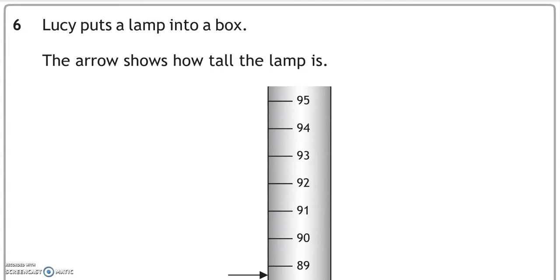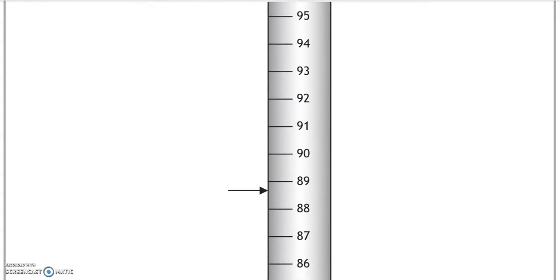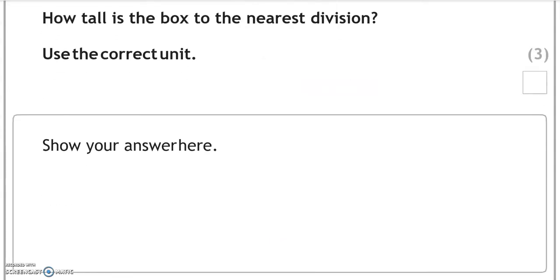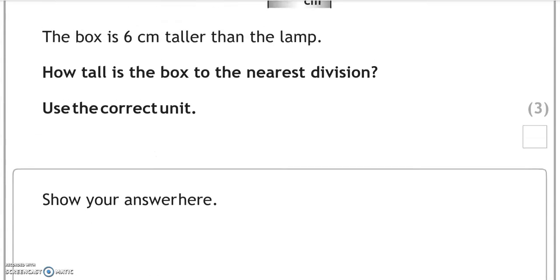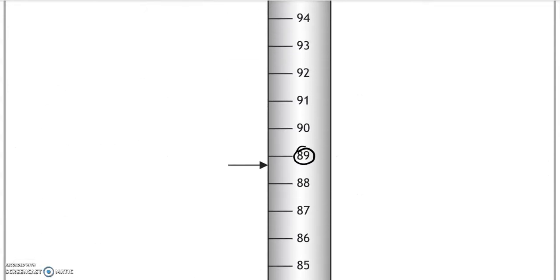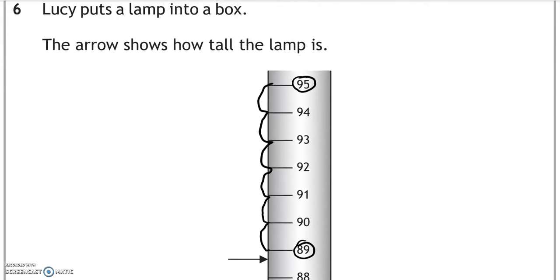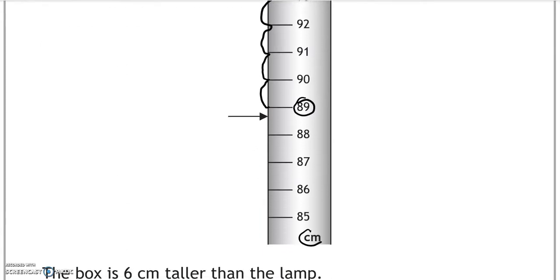Lucy puts a lamp into a box. The arrow shows how tall the lamp is. So it's about 89. The box is 6 centimeters taller than the lamp. How tall is the box to the nearest division? Use the correct unit. Show your answer here. So 6 centimeters taller, so we're going to go up in 6 steps: 1, 2, 3, 4, 5, 6. So about 95 centimeters.